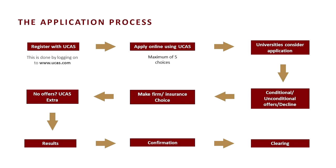Once you've got those offers in, you'll make your firm and insurance choices. Your firm choice should be the university you really want to go to, with entry requirements broadly in line with your predicted grades. Your insurance choice should be a university and course you're happy with but with a slightly lower entry requirement. If you've got no offers or you've chosen to withdraw, from February of year 13 you can go into a system called UCAS Extra, done through UCAS Track. For example, if you've been rejected from five places for psychology, you come to us at Newman through UCAS Track and ask us to consider your application. If we think you're suitable, you'll be made a conditional offer; if we decline you, you go back into that pool and ask other institutions.